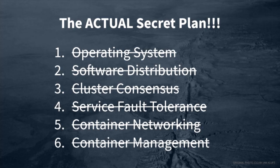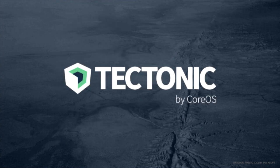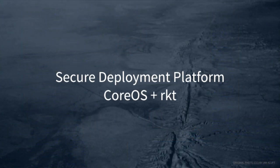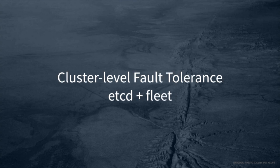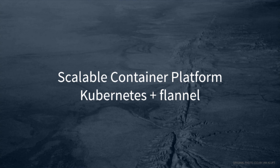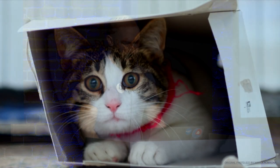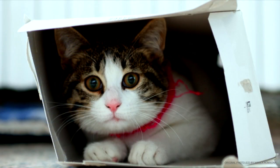So we've got all these pieces figured out. Those are the decisions that go into building something like Tectonic. If you do this yourself, you'll end up with a secure deployment platform using CoreOS and Rocket, cluster-level fault tolerance with etcd and Fleet, and a scalable container platform for your users with Kubernetes and flannel.